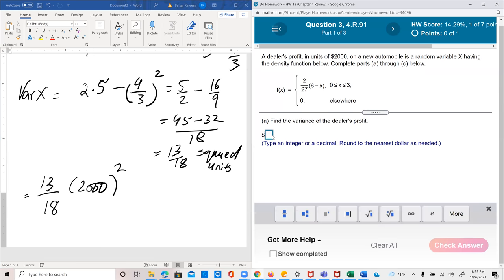Round to the nearest dollar. So to the nearest dollar I get $288,889.